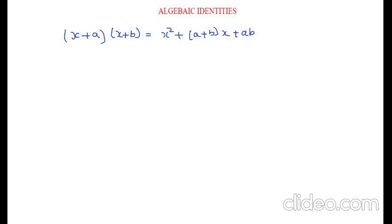Hello, welcome to my channel Math with Nazia. In this video I am going to explain a very important identity: (x + a)(x + b) = x² + (a + b)x + ab. This is very easy — I will show you how this identity is derived.